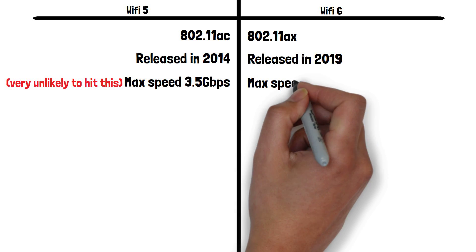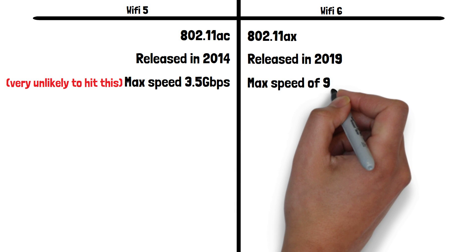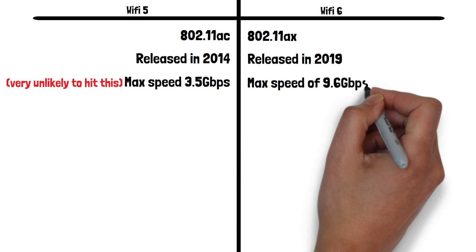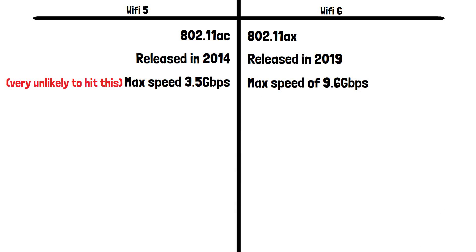Wi-Fi 6 has a theoretical limit of 9.6 gigabits per second, but again you're very unlikely to get this incredible speed when connecting to a Wi-Fi 6 router for the same reasons previously mentioned.